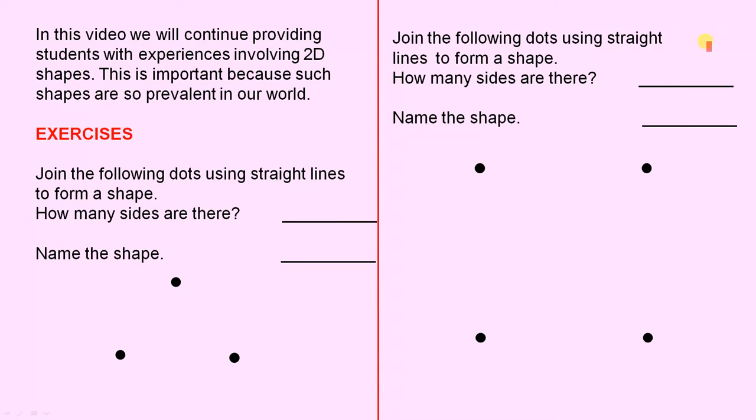Join the following dots using straight lines to form a shape. Here we have four dots. How many sides are there? And name the shape. So again, give students whatever help they need to be able to do this question.